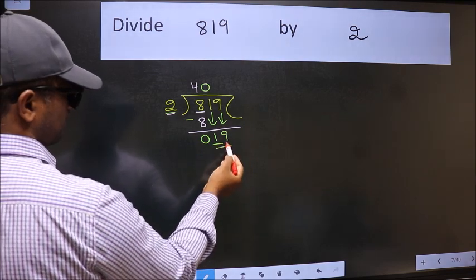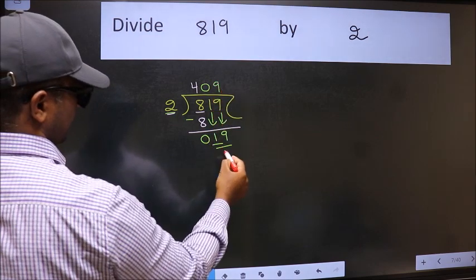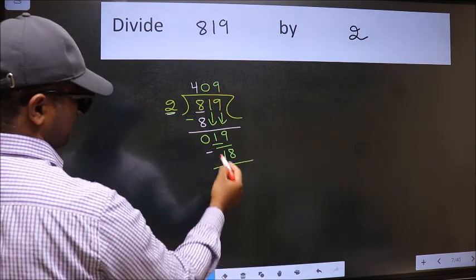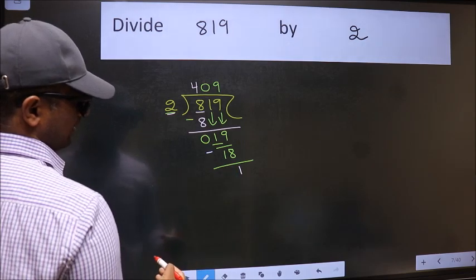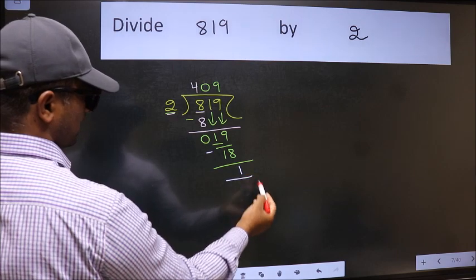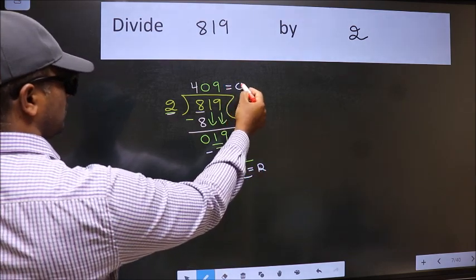Now 19. A number close to 19 in the 2 table is 2 times 9 equals 18. Now we should subtract. We get 1. No more numbers to bring it down, so we stop here. This is our remainder and this is our quotient.